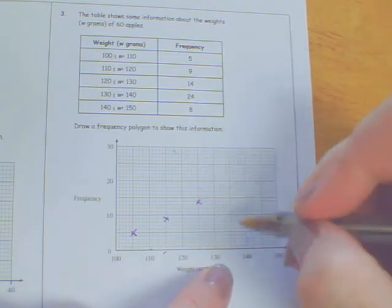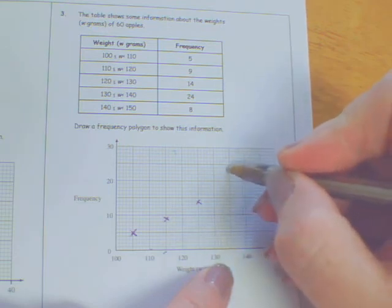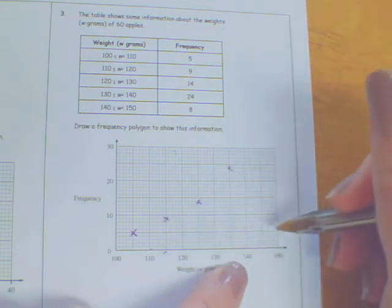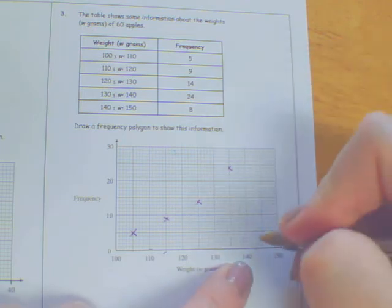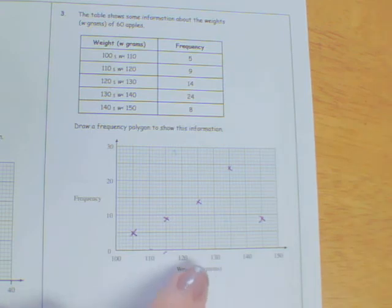130 to 140, I want to go halfway and go all the way up to 24. And the last one, 140 to 150, go halfway and go up to there.